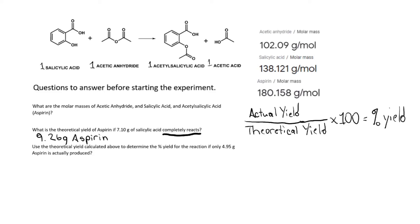We already calculated the theoretical yield, and they're giving us the actual yield of 4.95 grams. We divide it by our theoretical yield of 9.26 grams, multiply that by 100, and we get 53.45 percent.